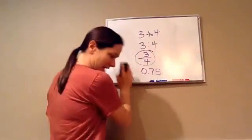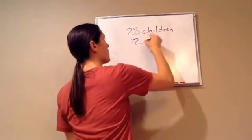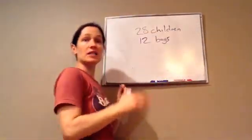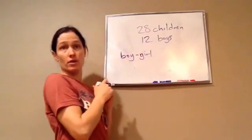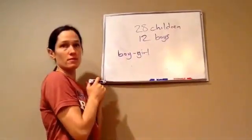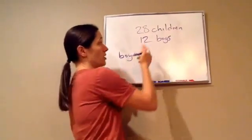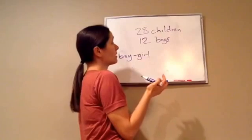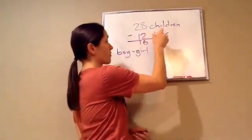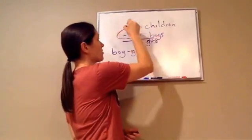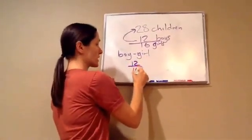Now, if there's a group of 28 children and 12 of them are boys, what is the boy-girl ratio? It doesn't tell us how many girls, so we subtract 12 from 28 to get 16. So 12 of them are boys and 16 are girls, which makes a total of 28 children. We're wanting to know boy-to-girl, so it's 12 to 16.